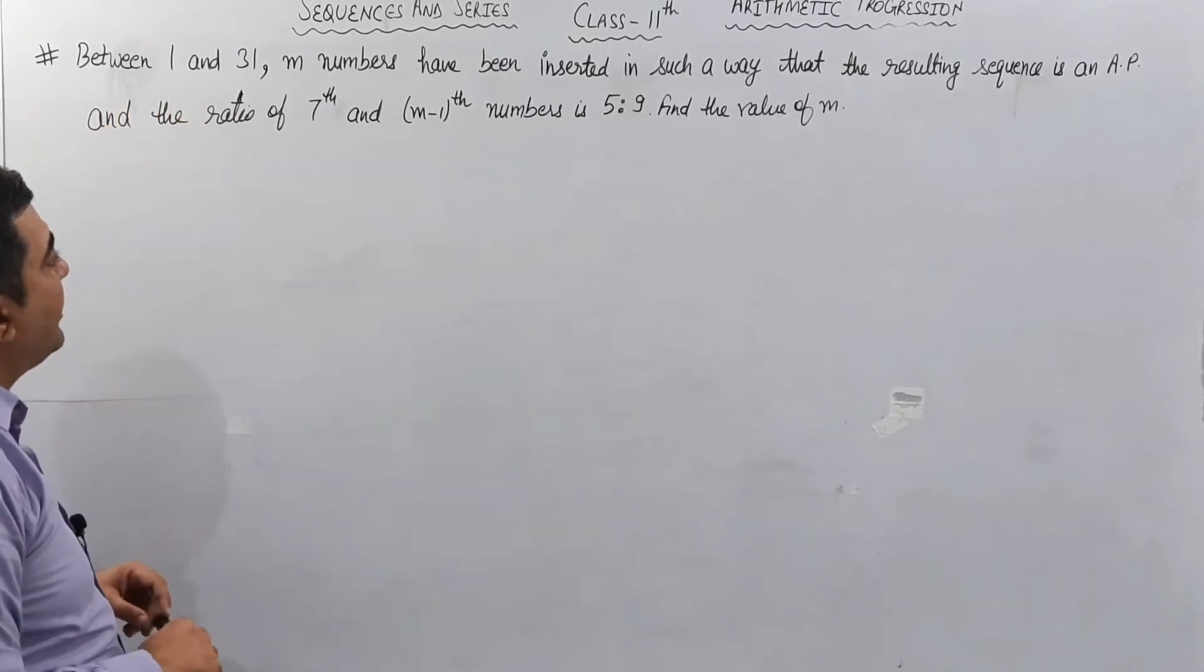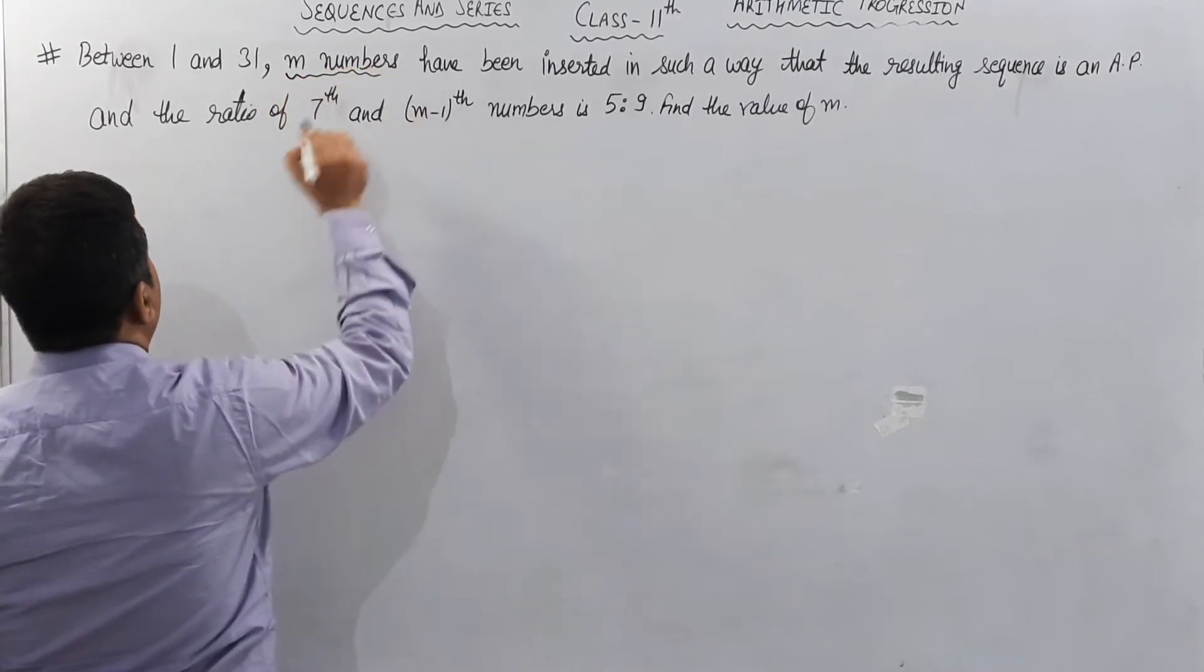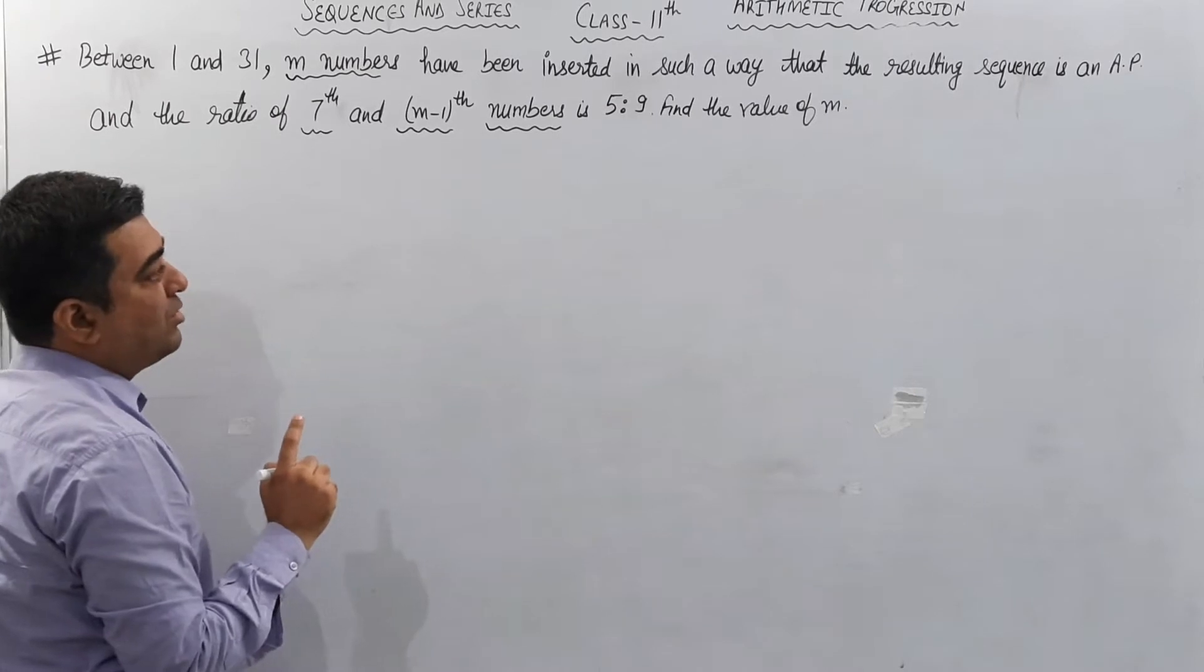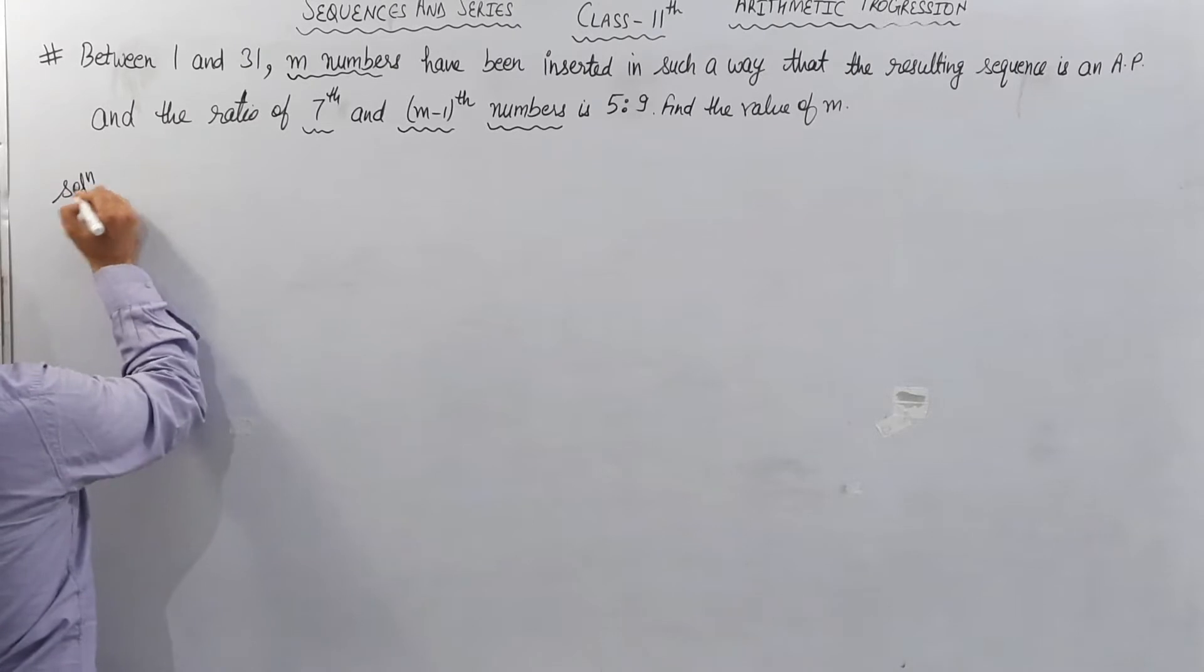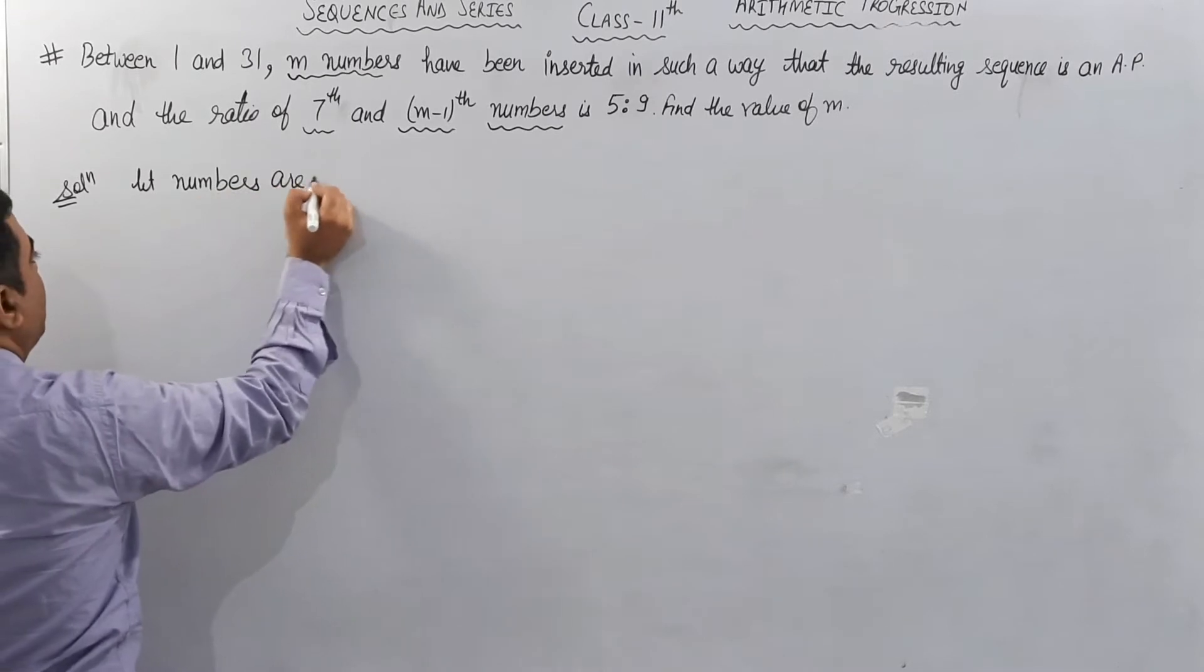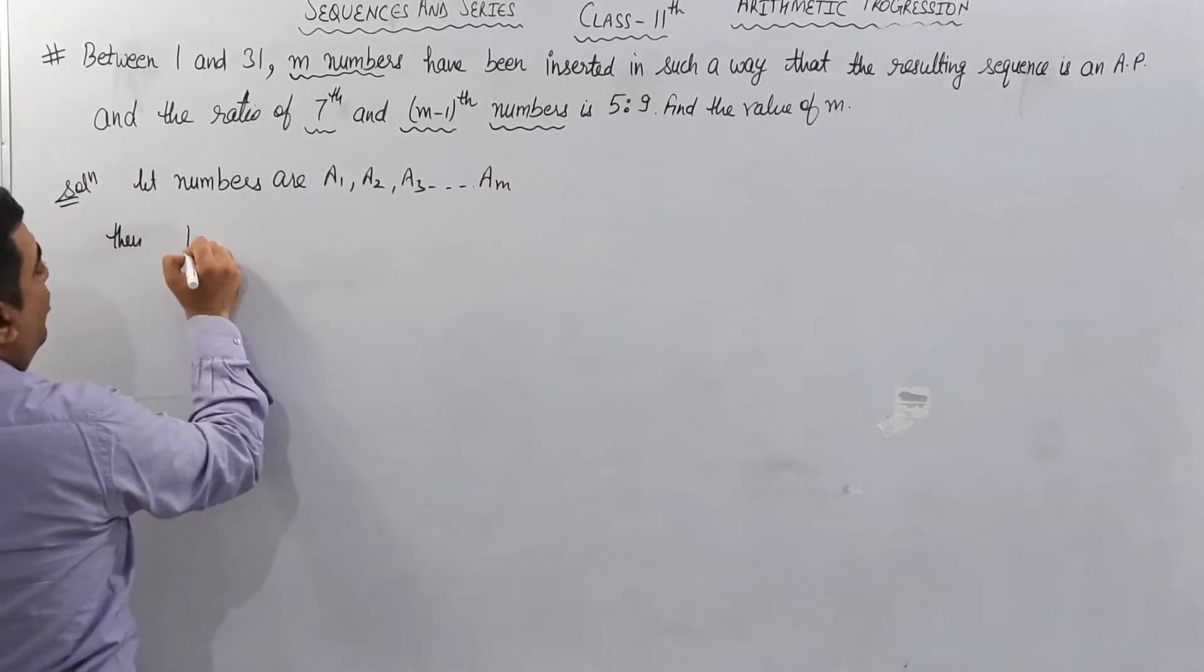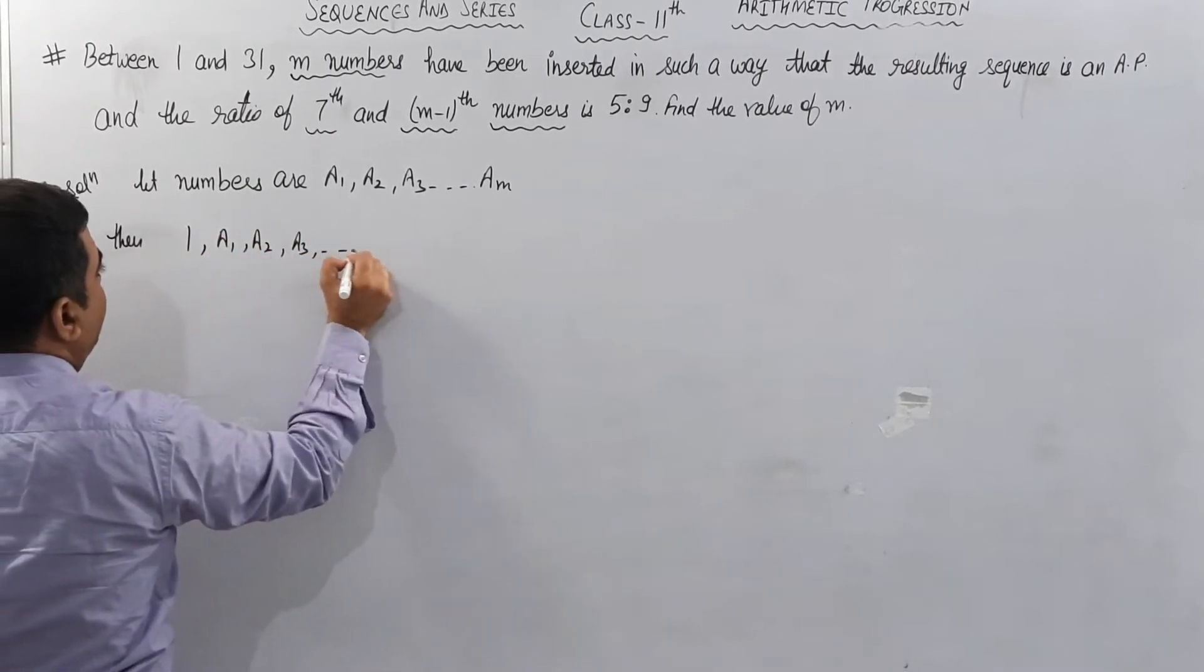Between 1 and 31, m numbers have been inserted. The ratio of the 7th and (m-1)th numbers is 5:9. Find the value of m. In this solution, first I will imagine the numbers are a1, a2, a3, ..., am. Then 1, a1, a2, a3, ..., am, 31 are in AP.